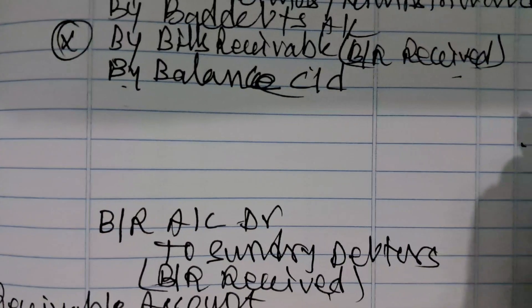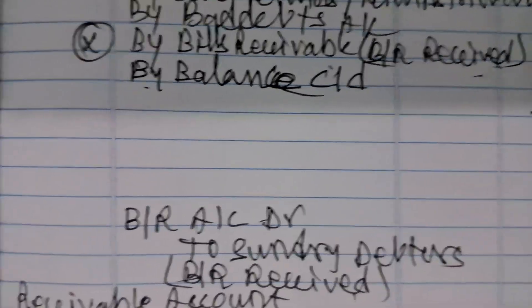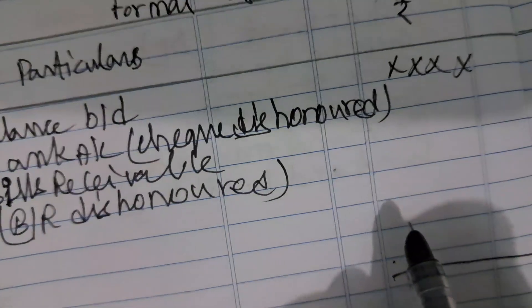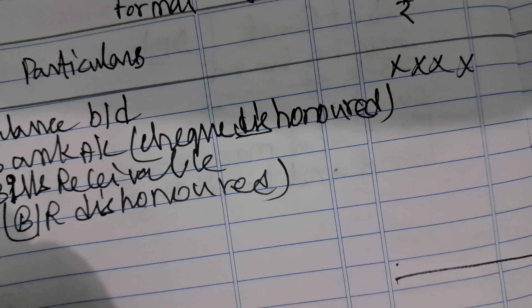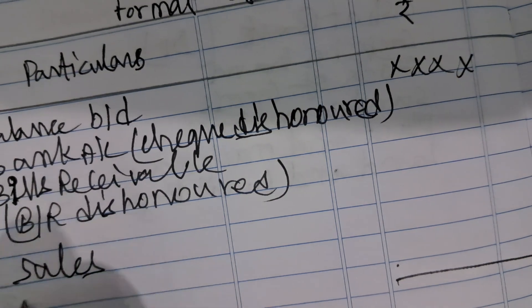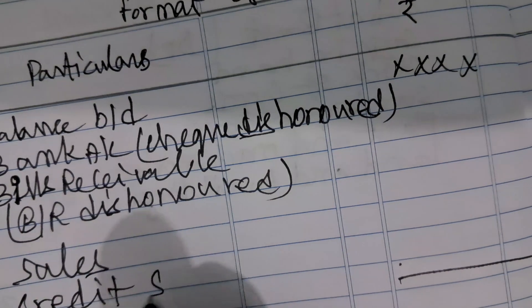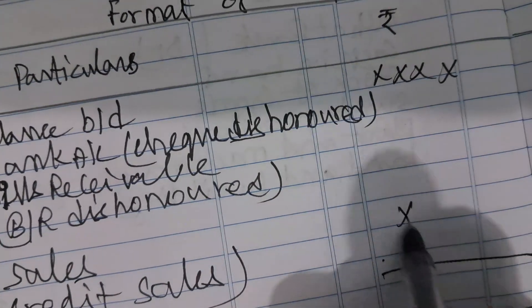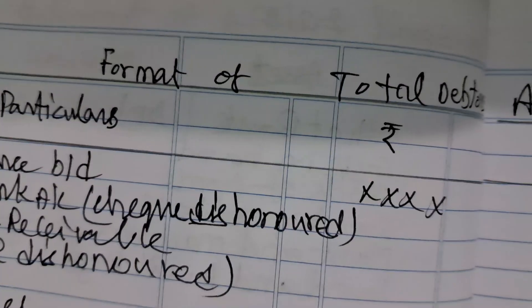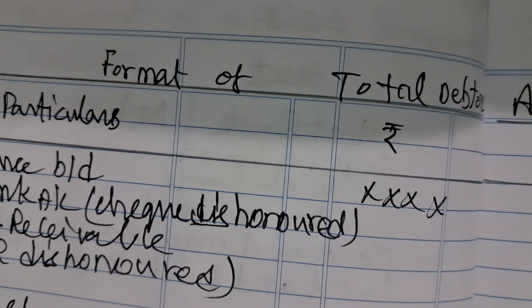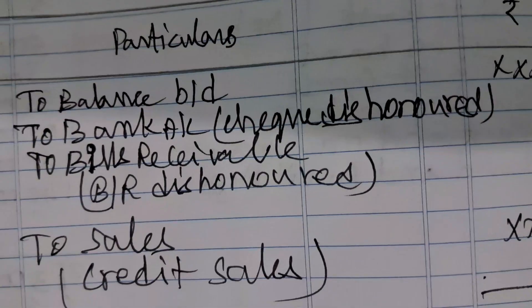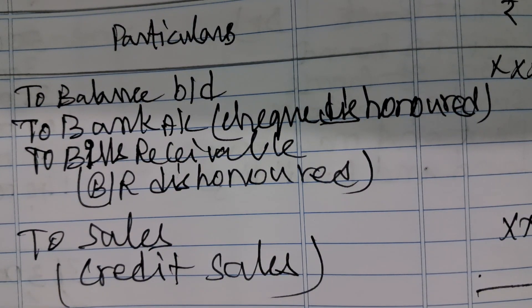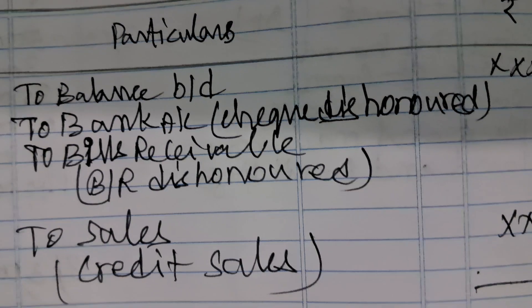The credit side total and debit side total are compared. The balancing figure on the debit side is the missing amount — this is entered as 'To Sales', which represents credit sales. The Total Debtors Account is prepared specifically to find out the credit sales.